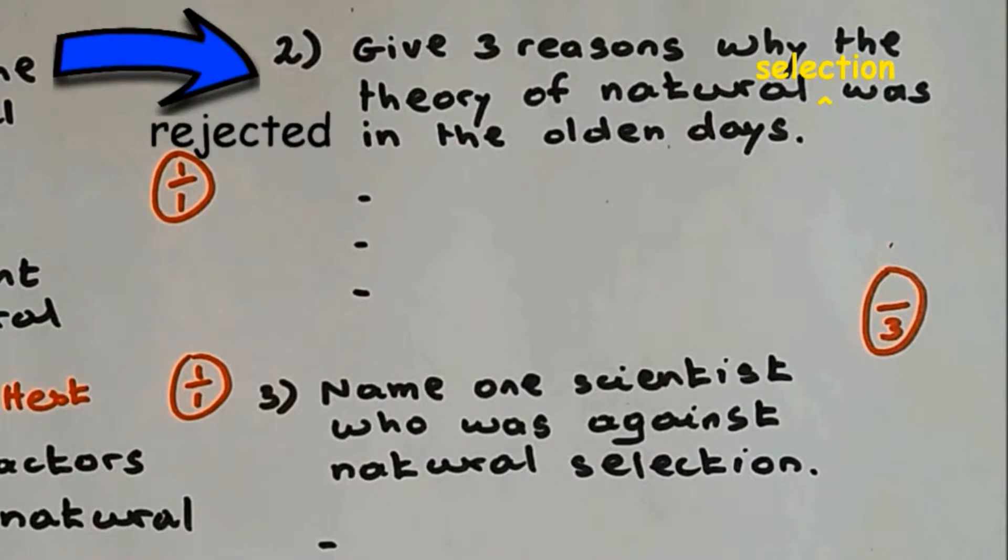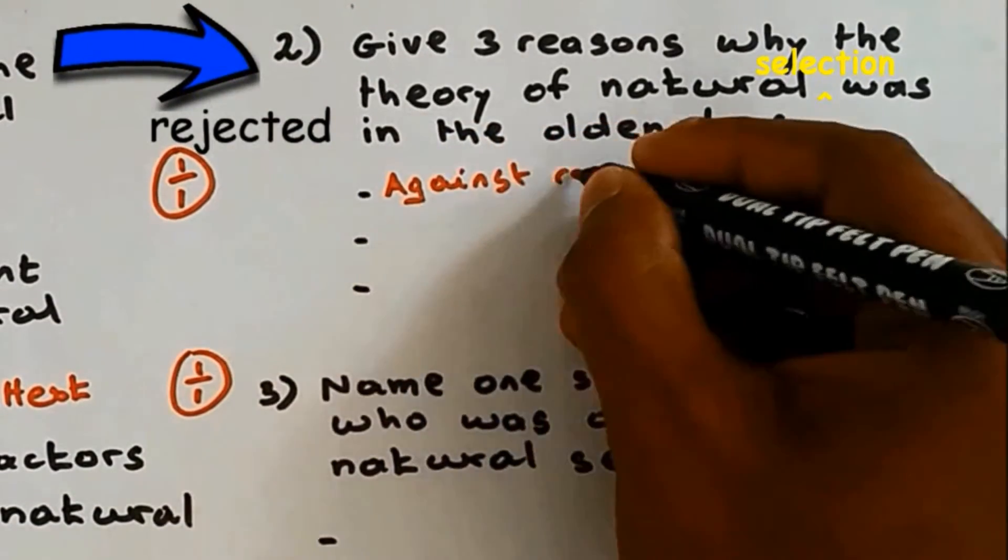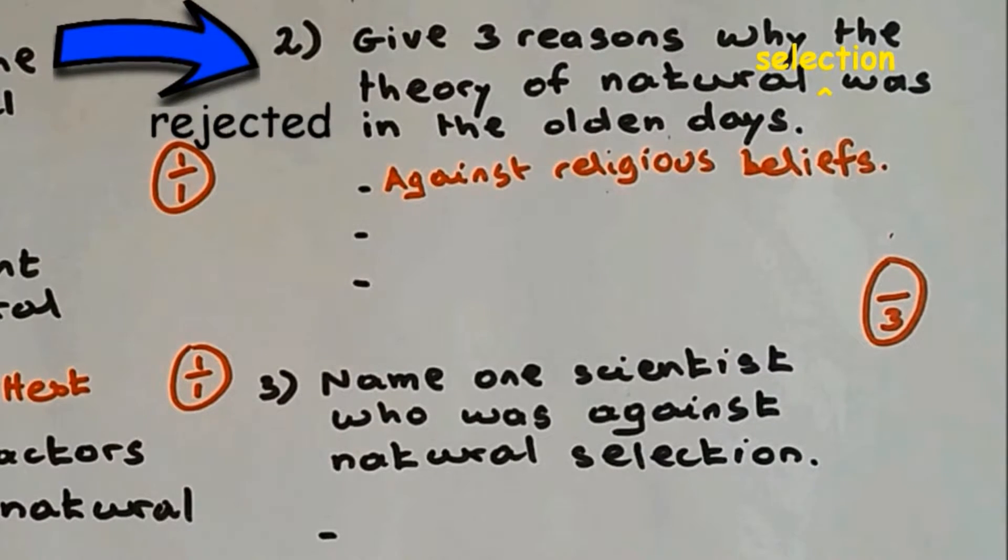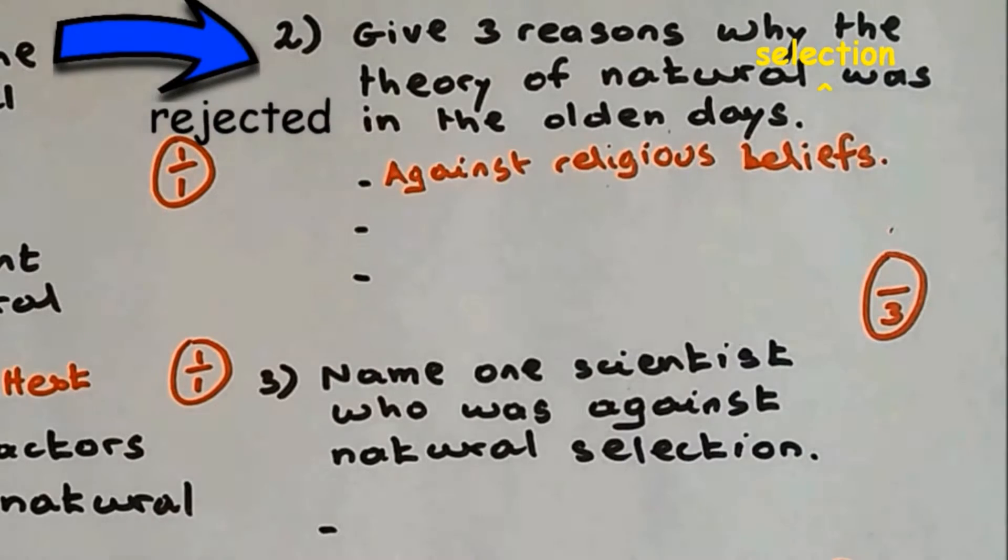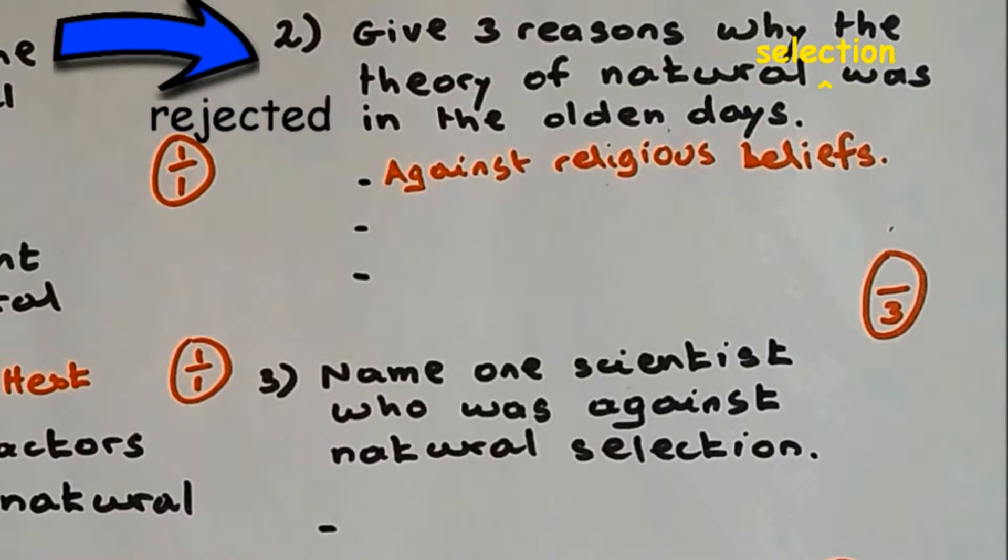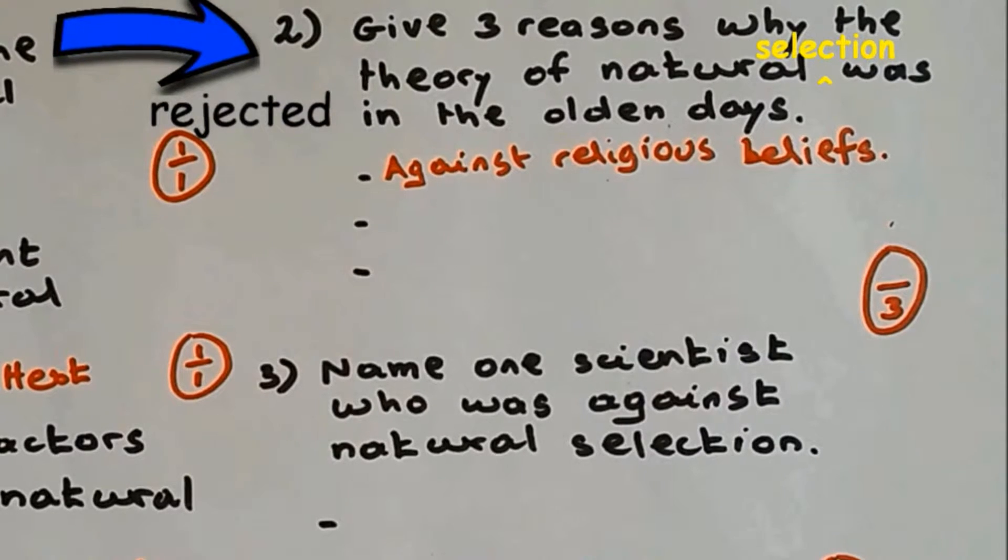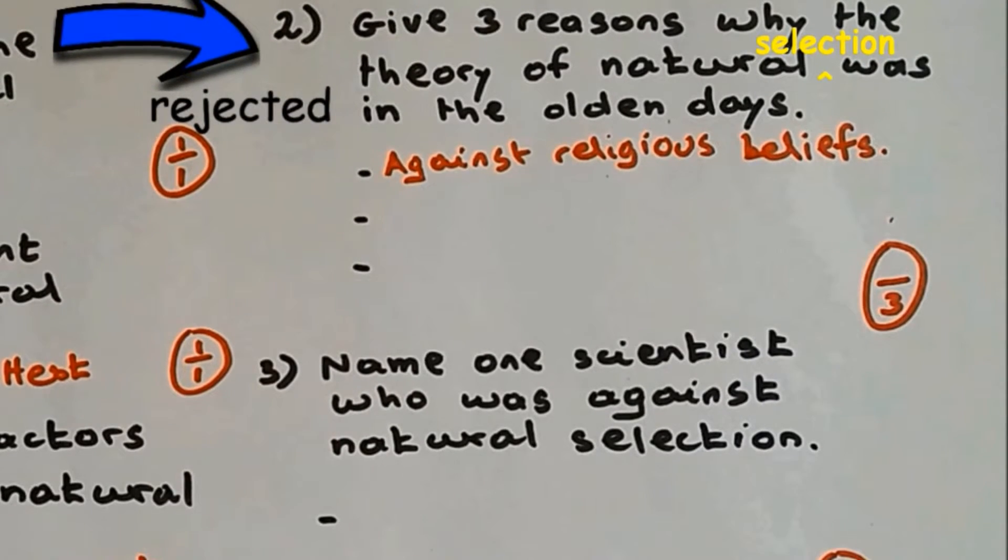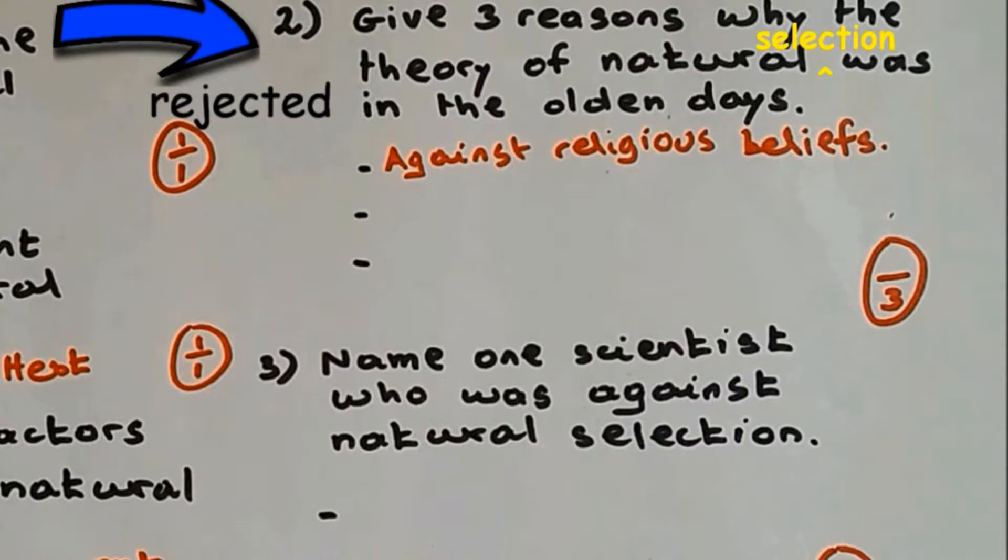The reason why new characteristics were formed is because of mutation, but back in the olden days DNA was not discovered, so mutation could not be explained. So you could either say he could not explain the new characteristics, or you could say DNA was not discovered. The third reason: there were other theories proposed by other scientists.